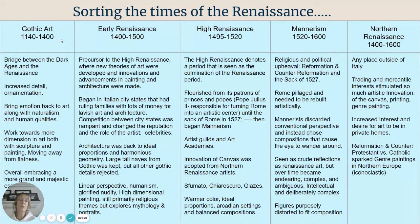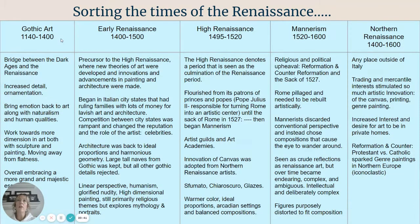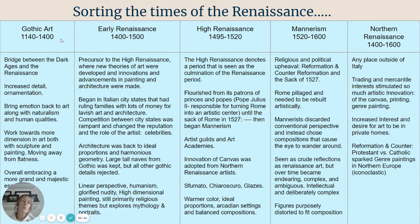The High Renaissance introduced three important new techniques: sfumato, chiaroscuro, and glazes. Colors changed dramatically — becoming much warmer, filled with reds, oranges, and yellows, with even blues and violets balanced with warmer tones. Instead of the neutrals — browns, grays, and dull colors — of the medieval times, everything brightened up quite a bit.